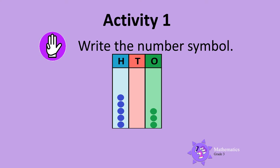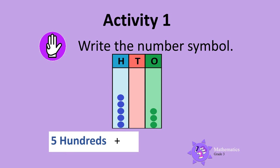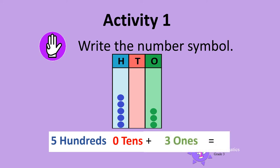Here is another one. Write the number symbols shown on this abacus. There are 5 counters in the hundreds column, so there are 5 hundreds. There are 0 counters in the tens column, so there are 0 tens. And there are 3 counters in the ones column, so there are 3 ones. 5 hundreds, 0 tens, and 3 ones make 503. So the number shown on the abacus is 503.